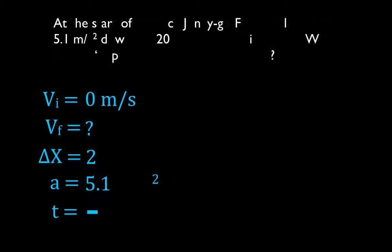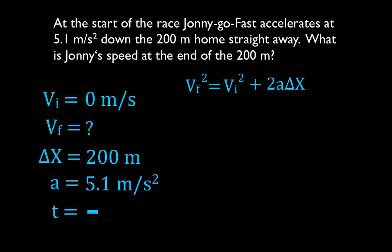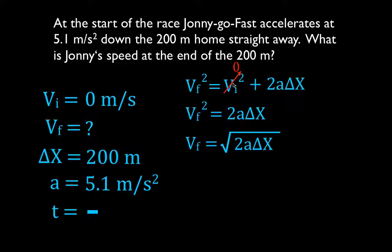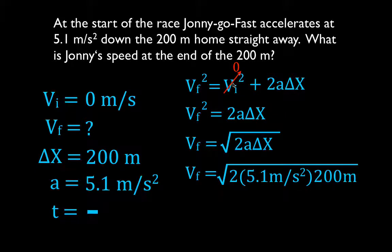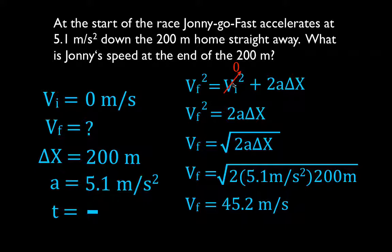We can simply plug the values in. Since the initial velocity is 0, the initial velocity squared is also 0, so the equation simplifies to: vf squared equals 2a·delta x. Solving for vf, we take the square root of both sides: vf equals the square root of 2a·delta x. Plugging in the values: the square root of 2 times 1.5 times 200 gives a final velocity of 45.2 meters per second. That is the final velocity of Johnny Go Fast.